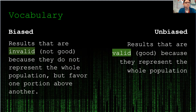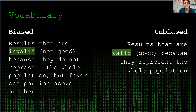When you get biased results, those results are invalid or not good because they do not represent the whole population but favor one portion above another. Unbiased results are results that are valid or good because they represent the whole population. For example, if I wanted to know what sport students at a school liked best and I only surveyed the eighth grade boys, that would be biased — it's leaving out all the girls and the other two grade levels, sixth and seventh, in a traditional middle school.